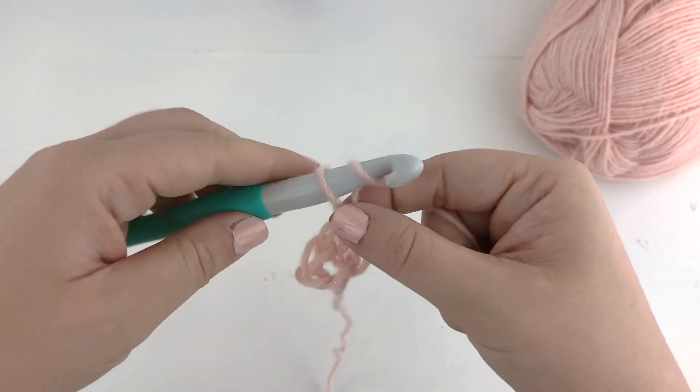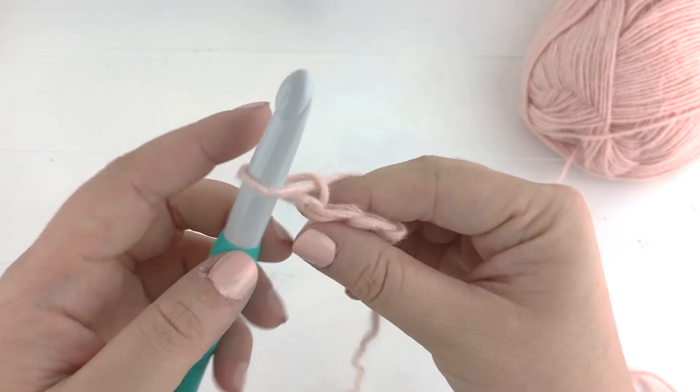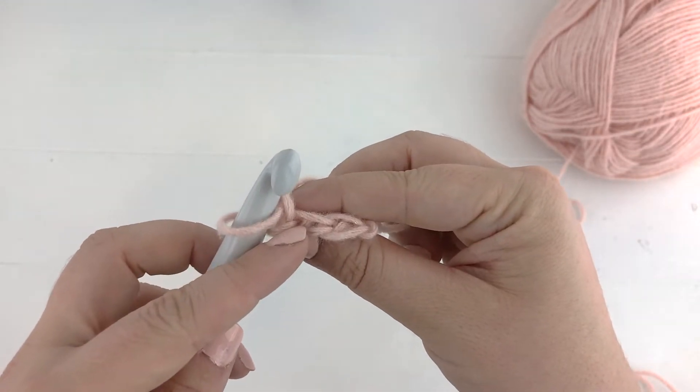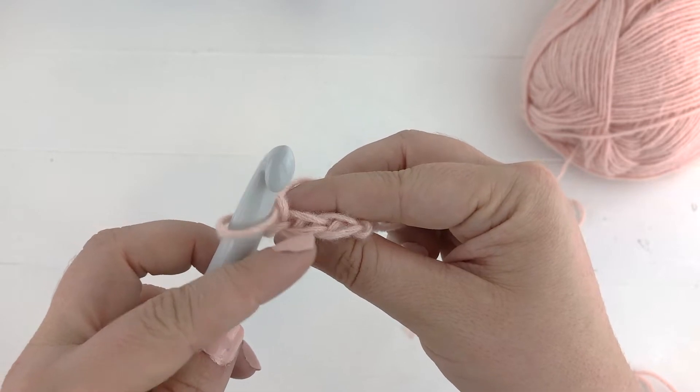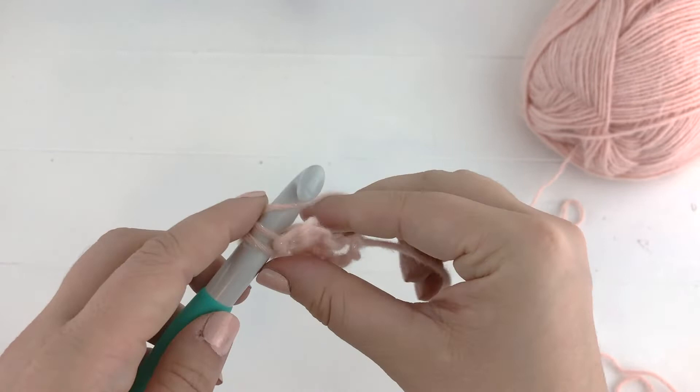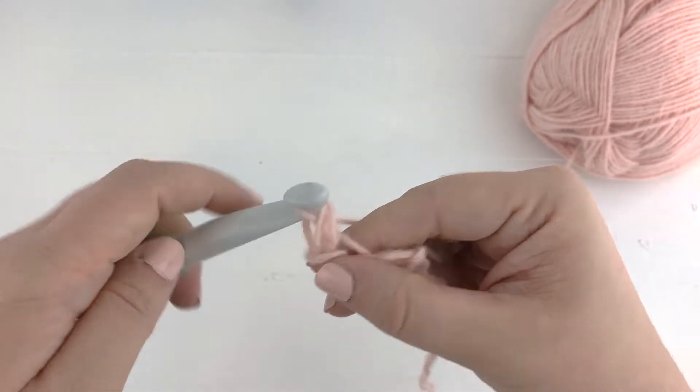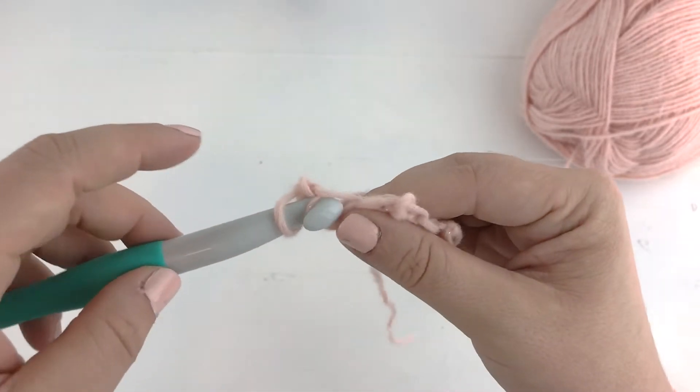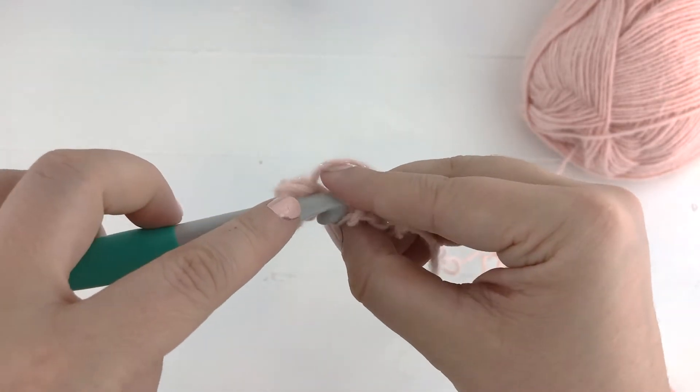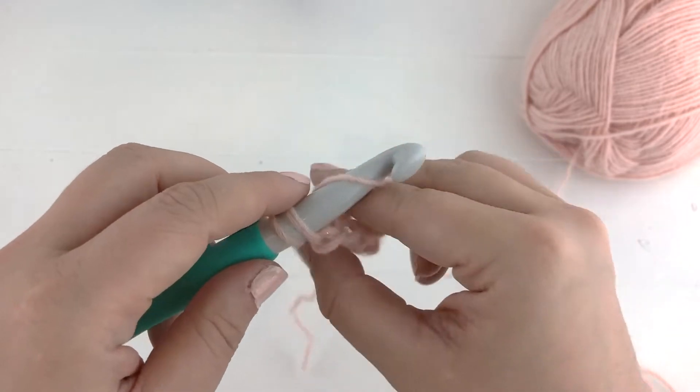All right, for row three we'll chain one and turn, and this is starting our repeat row. We are going to work two single crochet into the back loop only of the first stitch, so an increase in the first stitch. It'll probably feel a little weird working with such a large hook but you will get used to it. Now we are going to just single crochet into the next stitch.